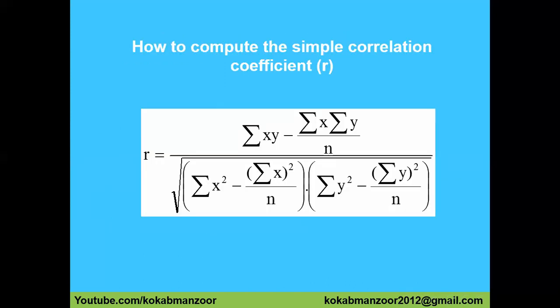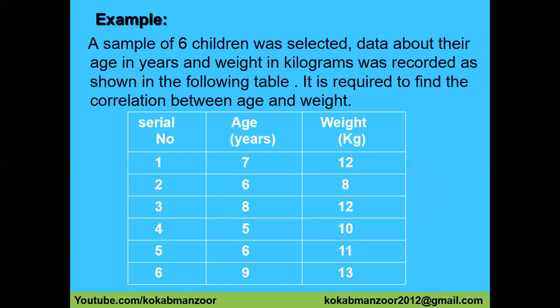Now, how do we calculate r? There is a formula — don't be scared, it's very easy. The formula is: r equals summation of xy minus (summation of x times summation of y) divided by n, all over the square root of [summation of x-squared minus (summation of x) squared divided by n] multiplied by [summation of y-squared minus (summation of y) squared divided by n]. Just note it down — I'll explain each part step by step.